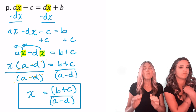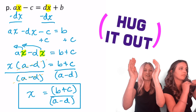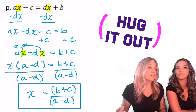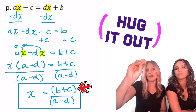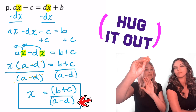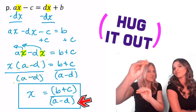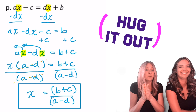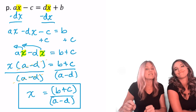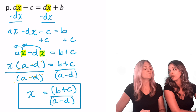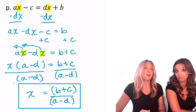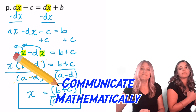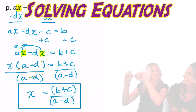Why do we put parentheses in the numerator and denominator? Because when evaluating, we must first find the sum in the numerator, then the difference in the denominator, and only then perform the division. The parentheses emphasize that order of operations. When you go practice on your own, communicate mathematically — show those actions on both sides with the properties of equality.